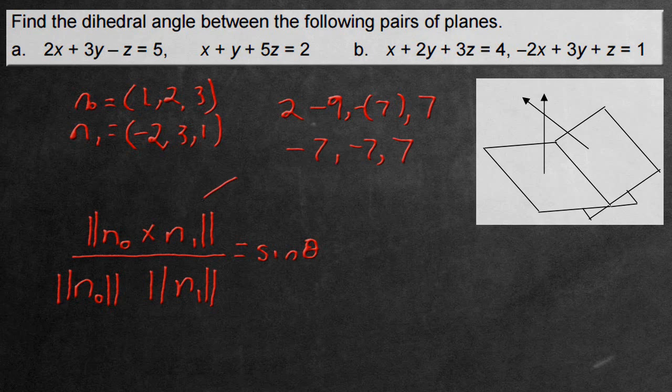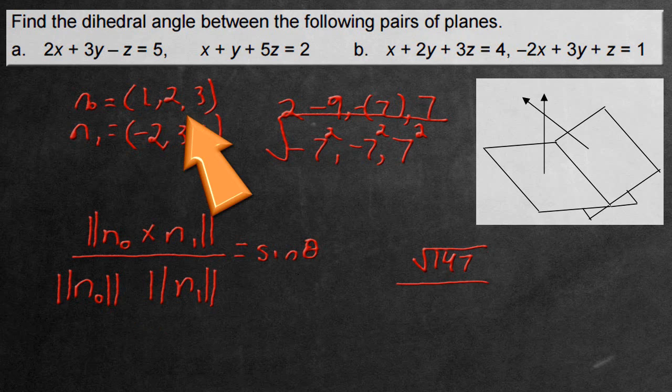It wants the magnitude of this, so we square all of this. Squaring eliminates the negatives, giving us the square root of 147. It's going to be divided by the magnitudes of the normals. That one is going to be square root 14, multiply the next one, also square root 14.